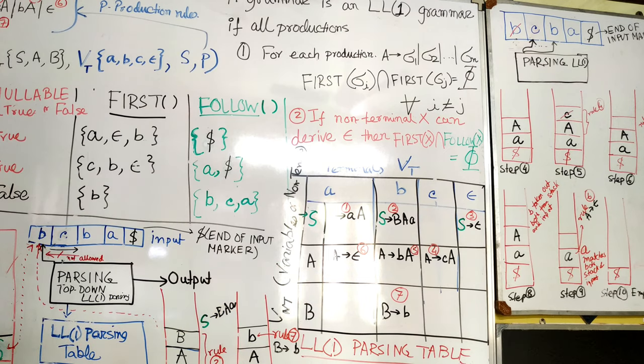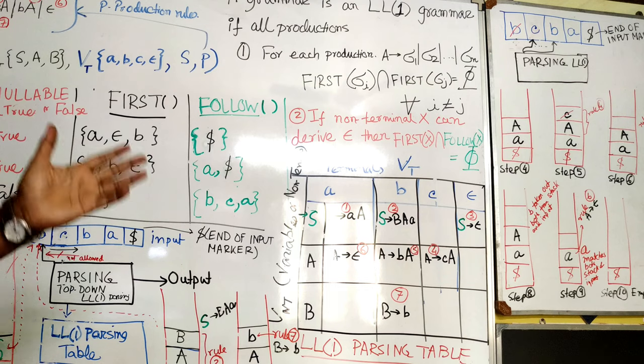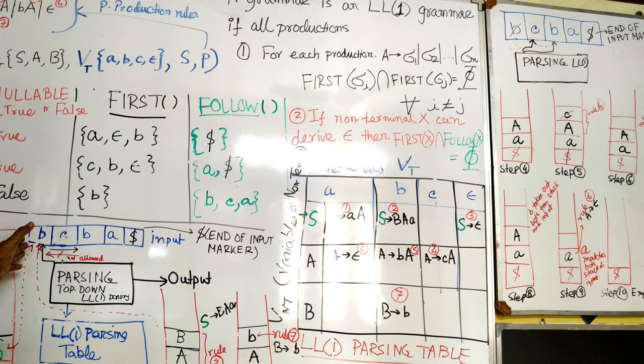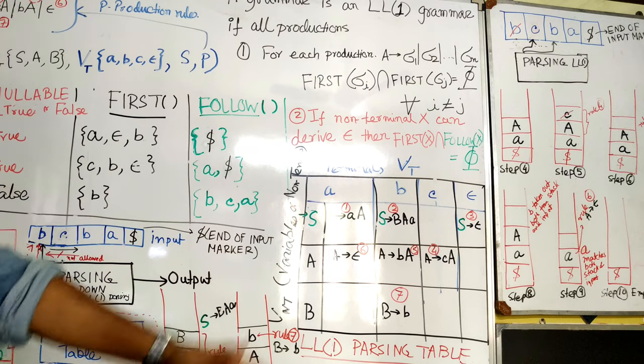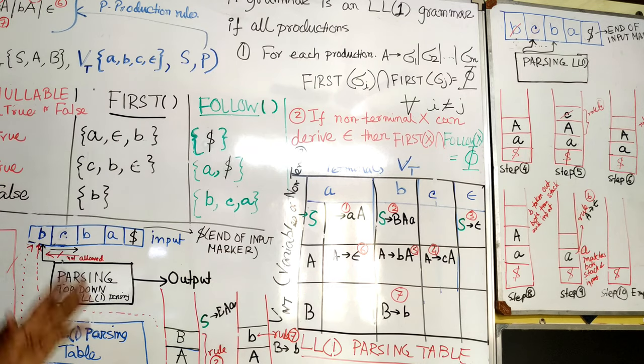In step 9, we have small a then end of stack marker. Your input is also a. So both are taken out. Now the end of stack is reached. That is success. Your input reaches dollar here and you have emptied your stack. That means your parsing is successful. This is a complete top-down parsing LL1.